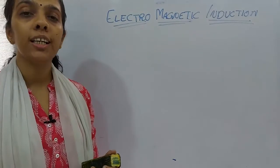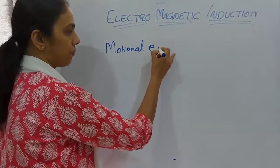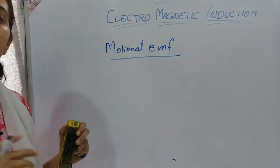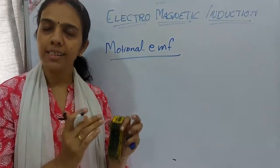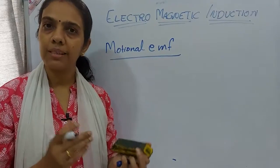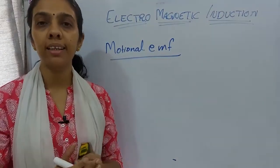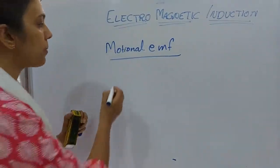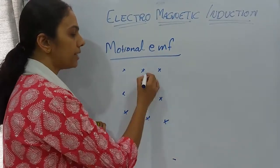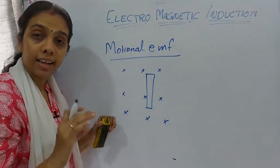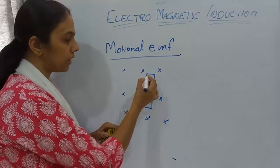What is motional EMF? The name itself says it's moving. If I am considering a conductor placed in a magnetic field — a conductor can conduct electricity, meaning charges and electrons can move inside it. When this conductor is present in a magnetic field and is moving through it, it will have positive and negative charges.